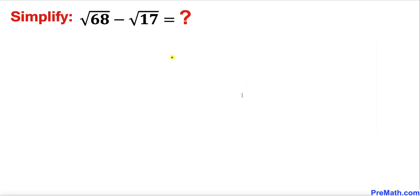Welcome to ProMath. In this video, we are going to simplify this square root problem: √68 - √17. Please don't forget to give a thumbs up and subscribe. Let's get started with the solution. Here's our radical problem and we are going to simplify it now.